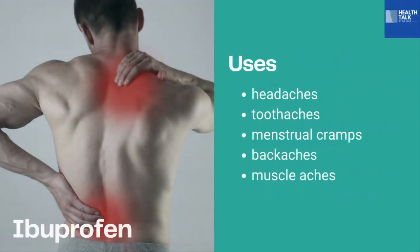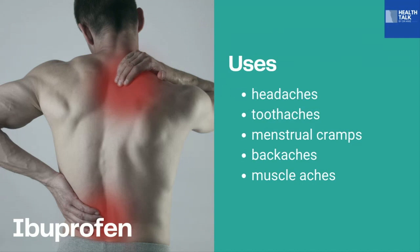In terms of its uses, this drug is commonly used among patients with headache, toothaches, menstrual cramps, backaches, and muscle aches. It is also used for inflammatory diseases such as juvenile idiopathic arthritis and rheumatoid arthritis. It is also used for pericarditis or patent ductus arteriosus. These are the common medical uses of this medication.